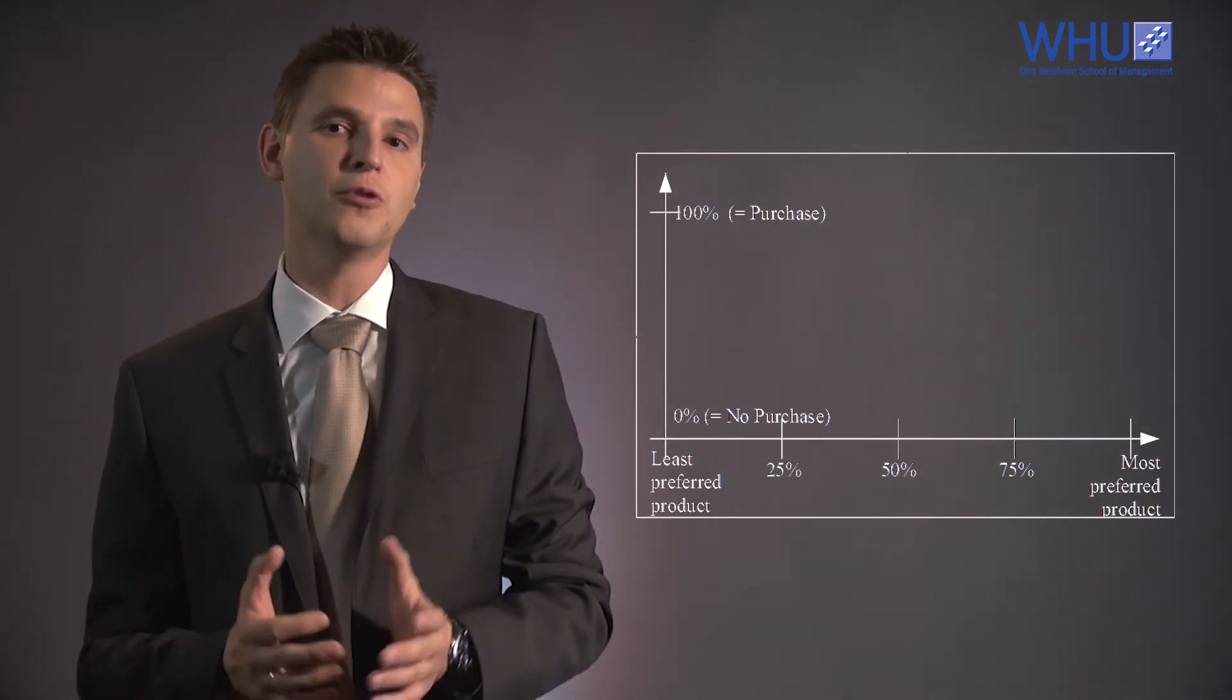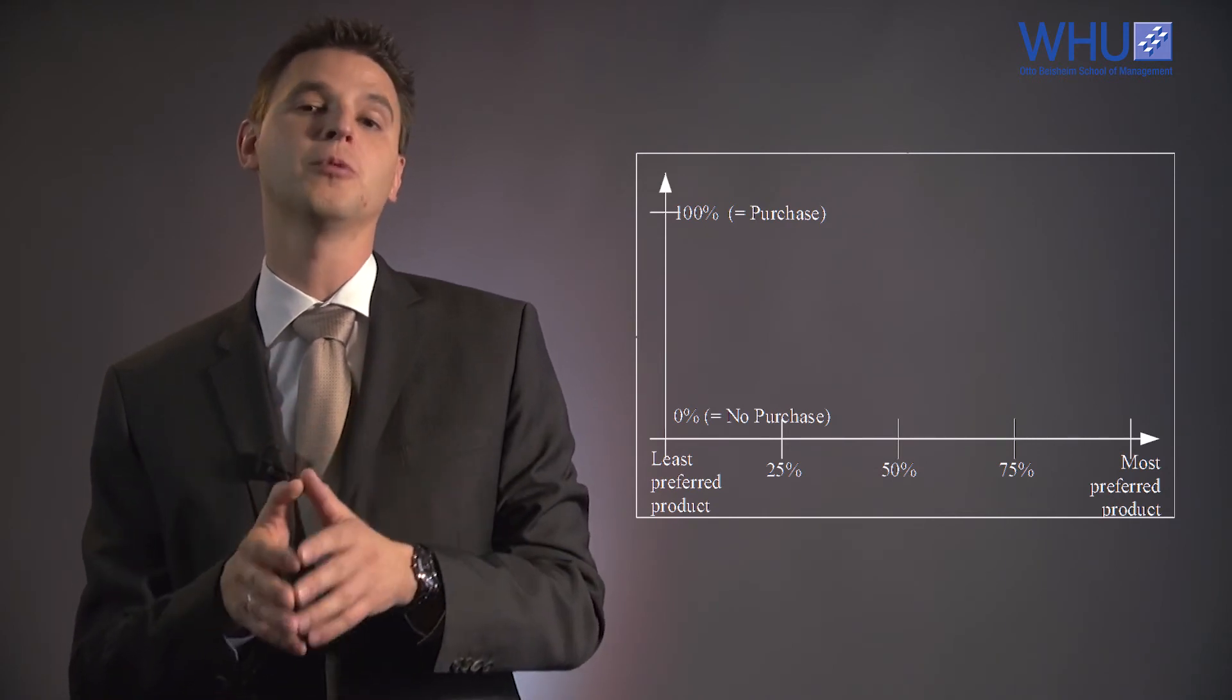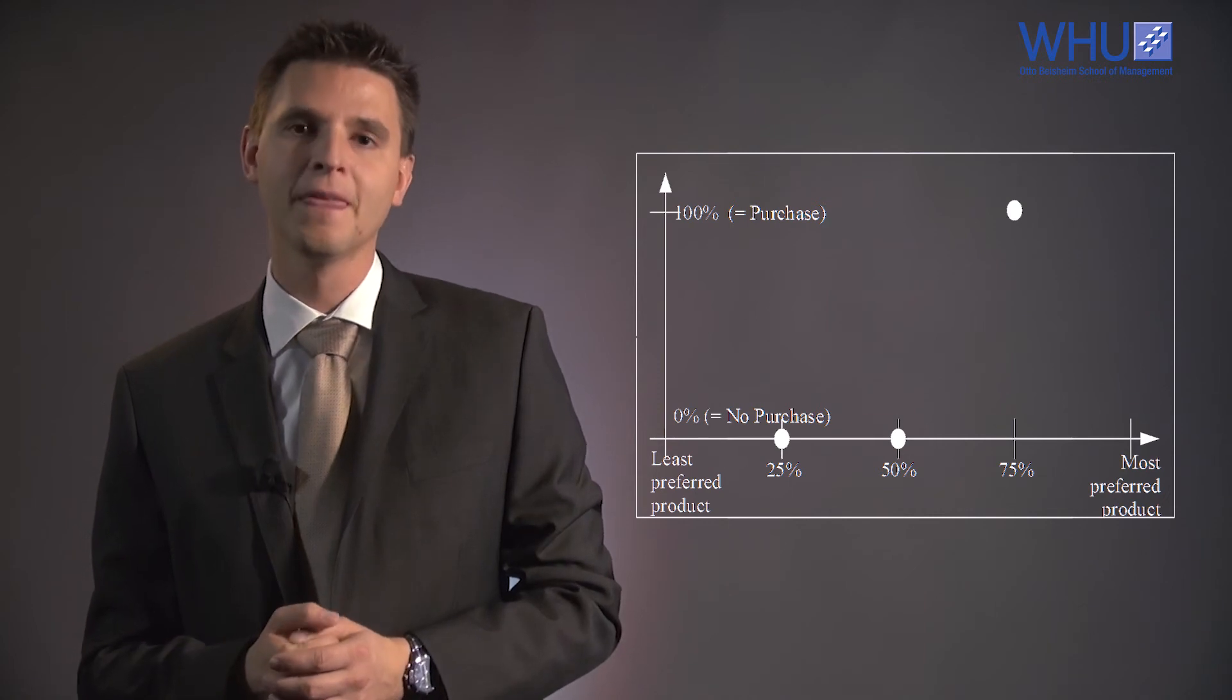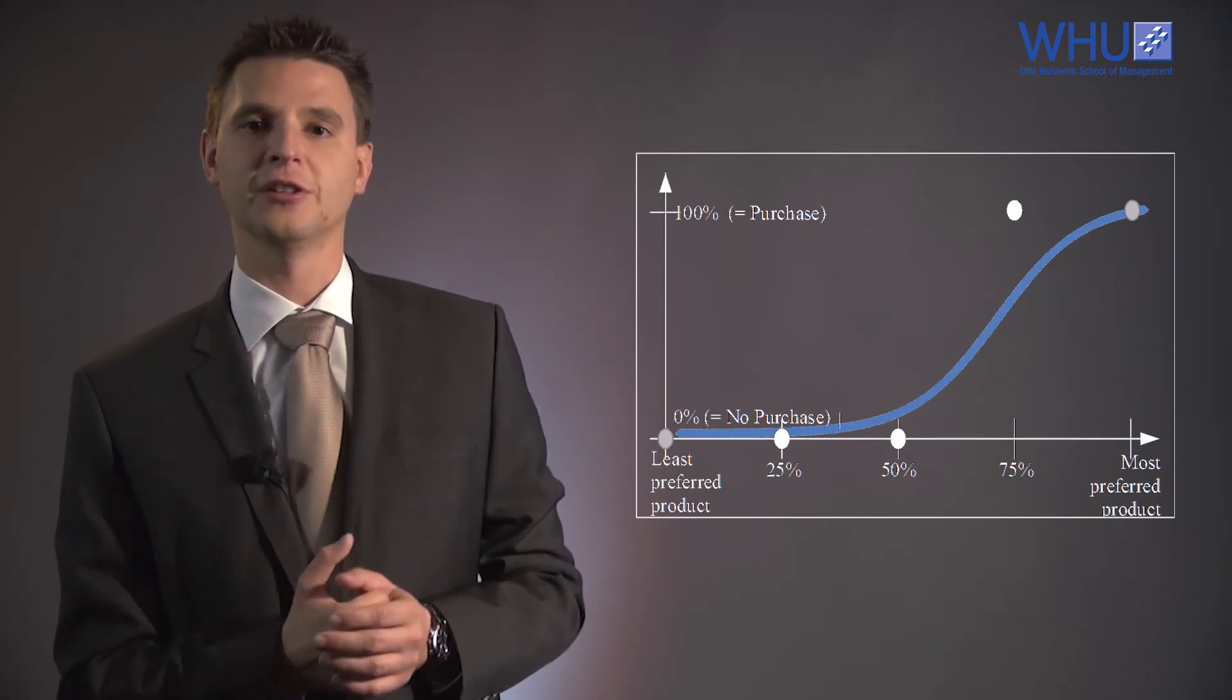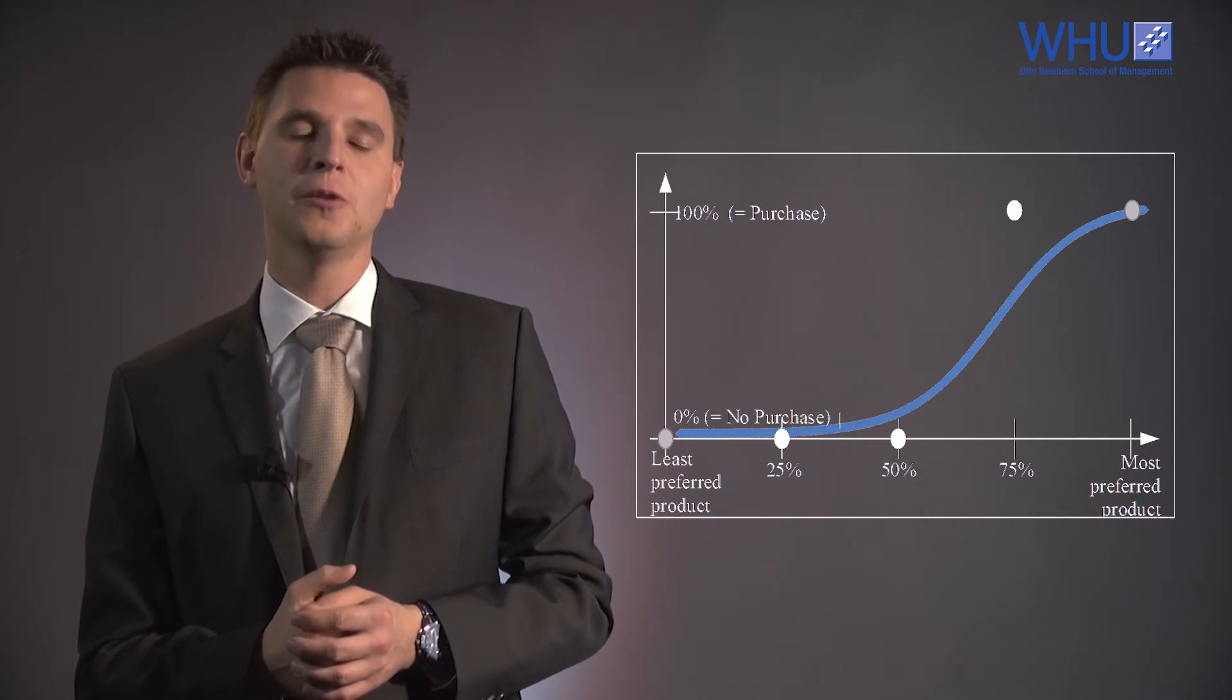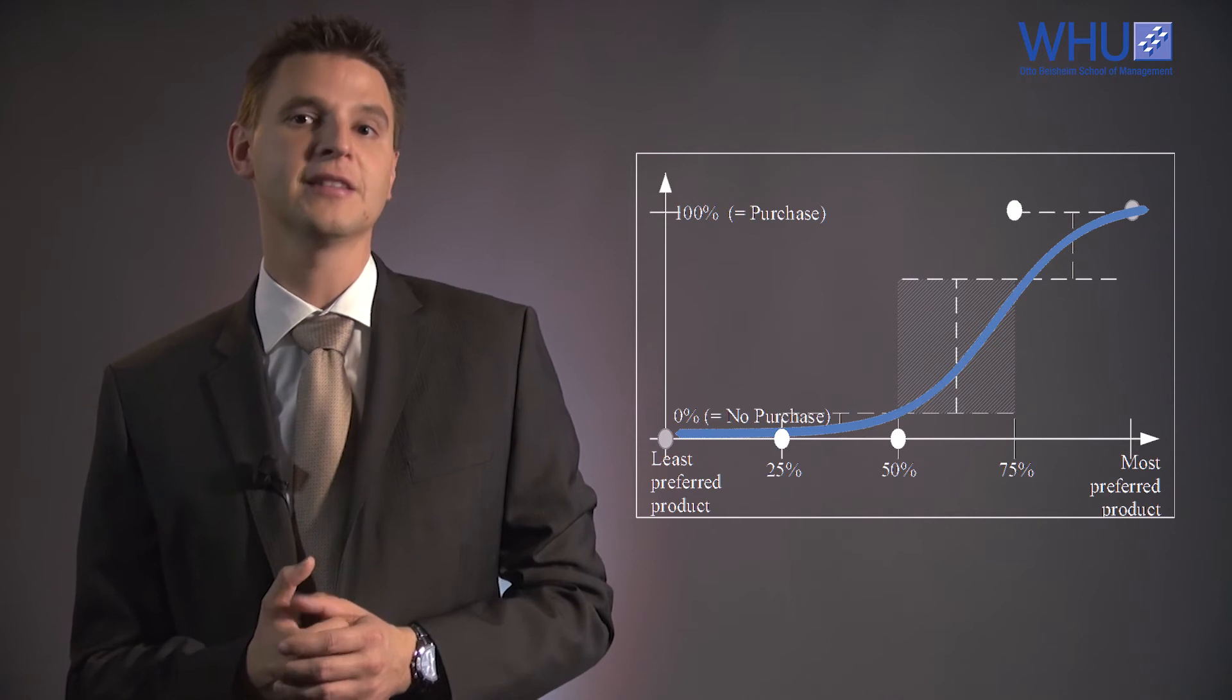We show these products in random order to the respondent and ask him each time whether he would buy or not buy the respective product. We use the observed purchase decisions to estimate a binary utility function and identify that range in which the changes in predicted purchase probabilities is largest.